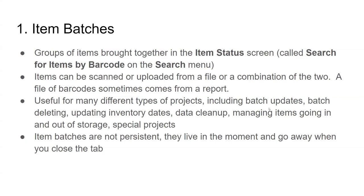For item batches, this is good for a project where you need to bring together a group of items — usually in the item status screen — because you need to do something with them. You need to edit them, mark them all missing, update the inventory date, change some data, or move them to a different shelving location. Items can be scanned or uploaded from a file into item status, but the batch you're creating is not persistent — you close that tab and it is gone.